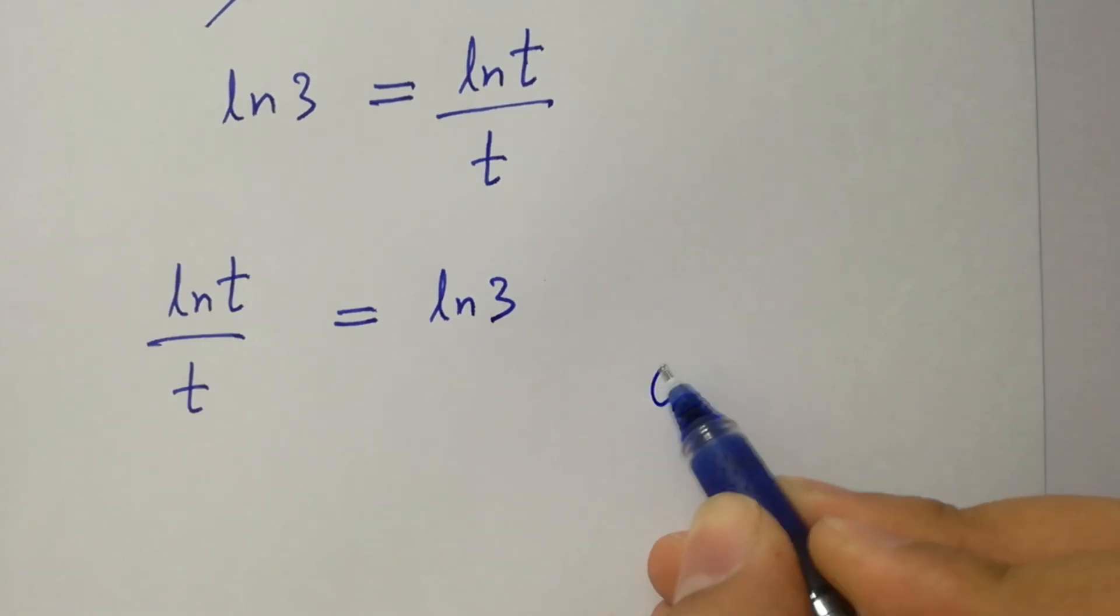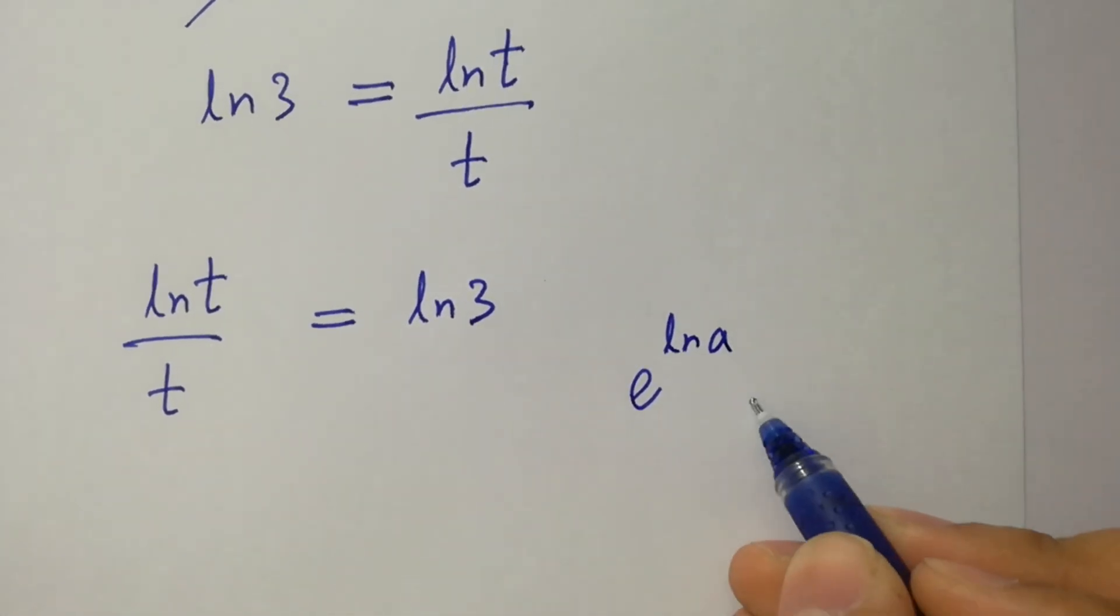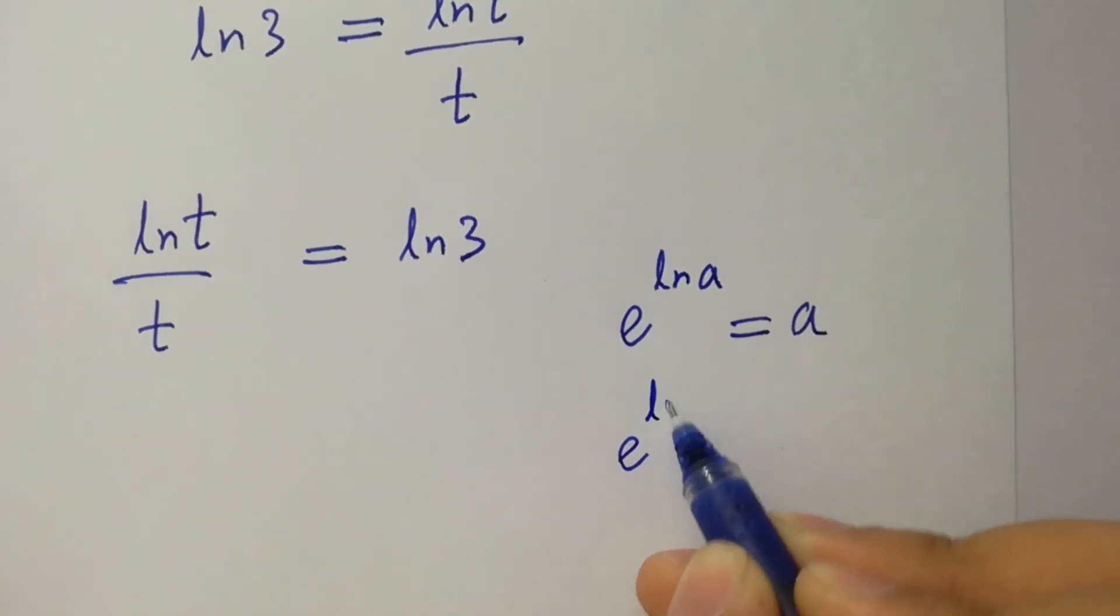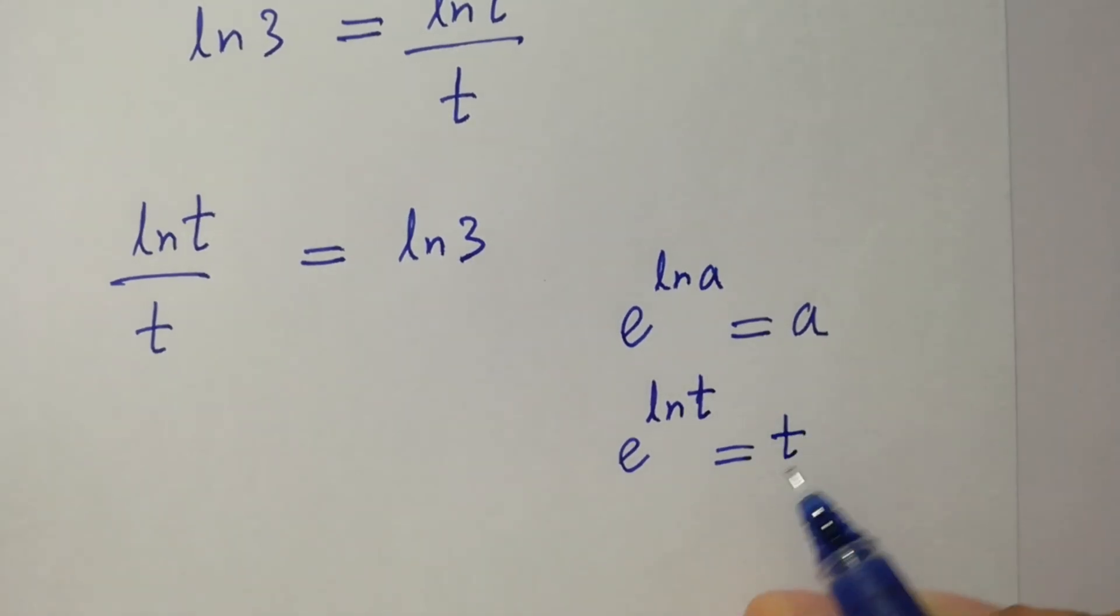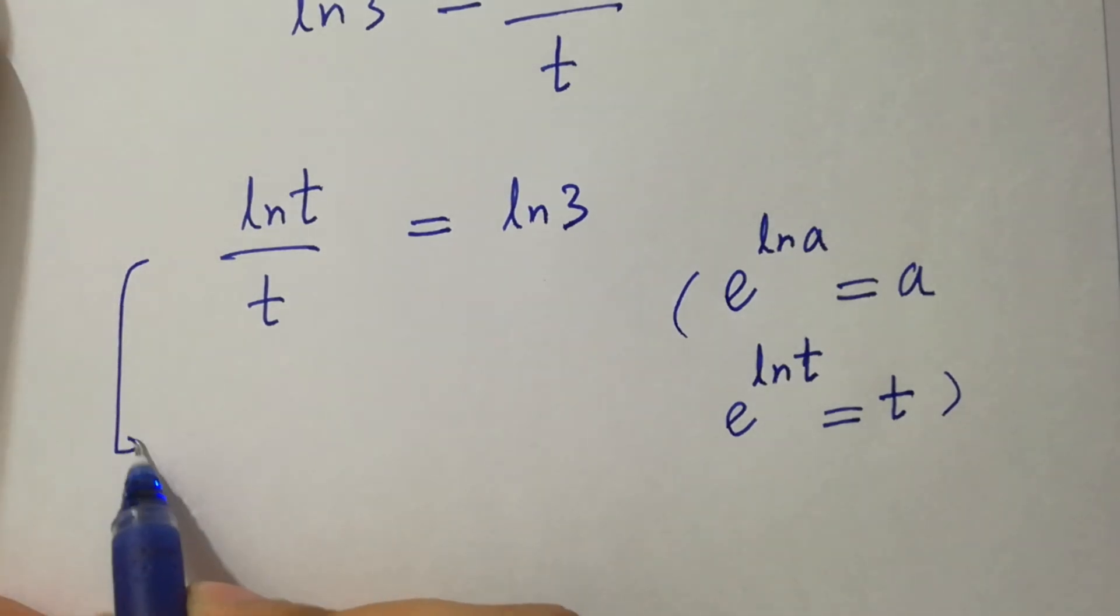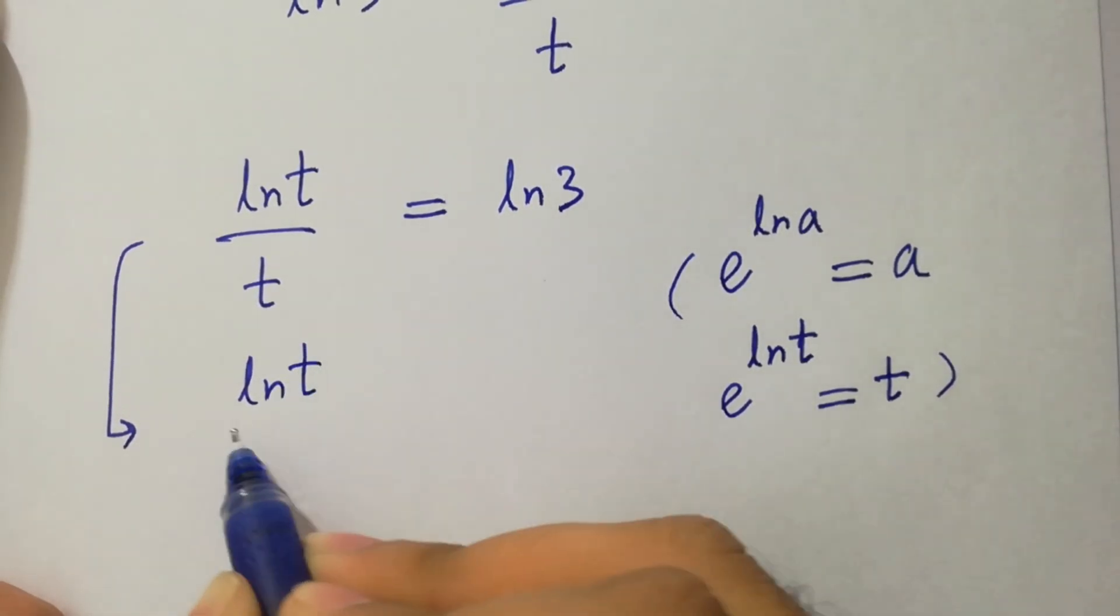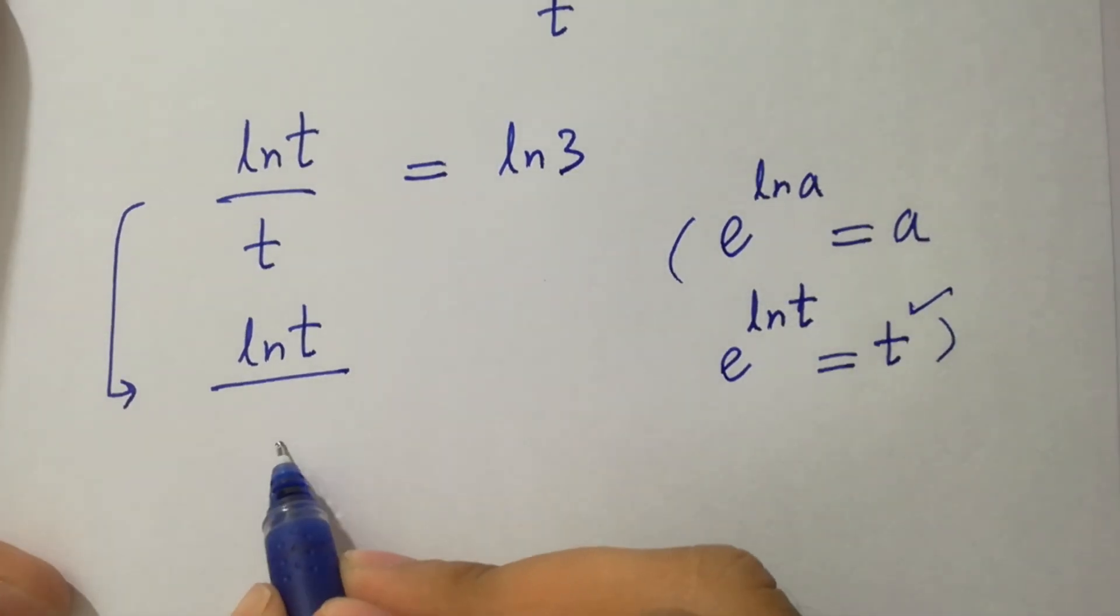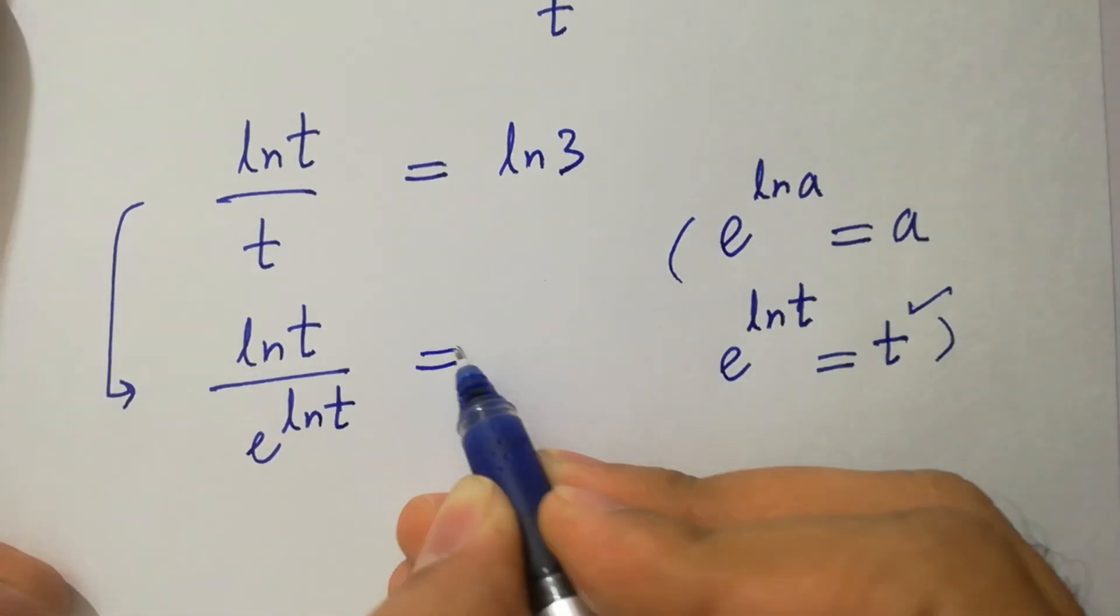Since e to the power ln a equal to a, then e to the power ln t will be equal to t. So here we have ln t over t is equal to e to the power ln t equal to ln 3.